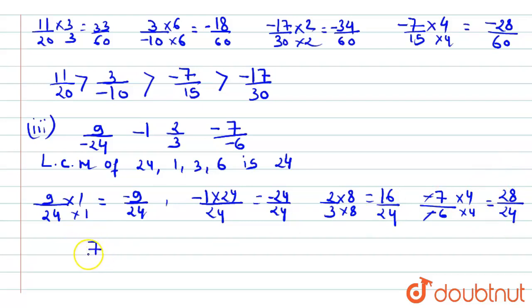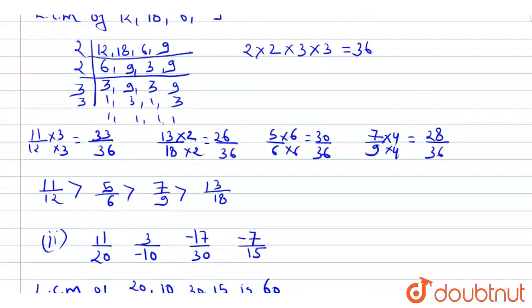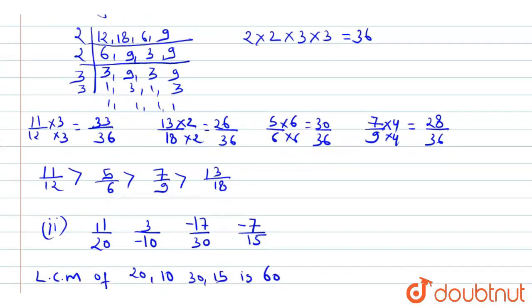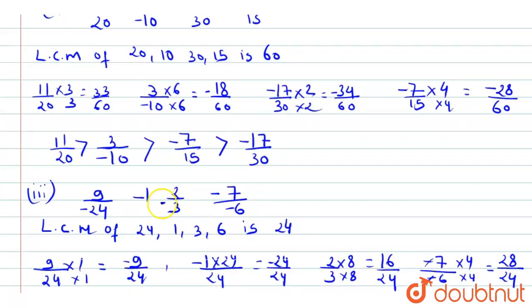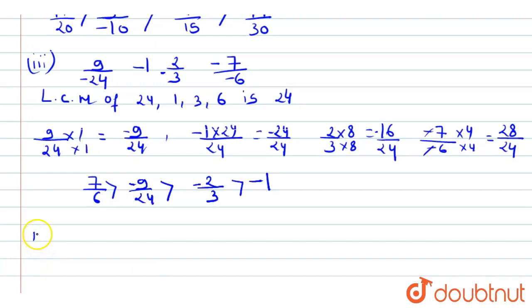Arranging in descending order: 28/24 (which is 7/6) is the greatest positive. Then we check 2/(-3) — going back to the question, it is a negative term. So the order becomes: 7/6 > -9/24 > -2/3 > -1.